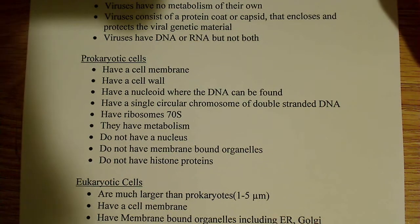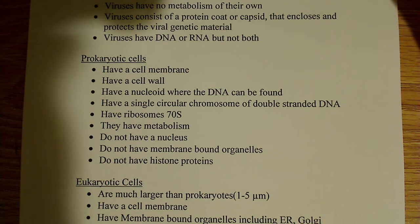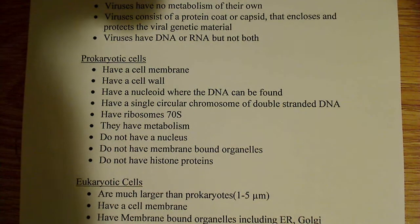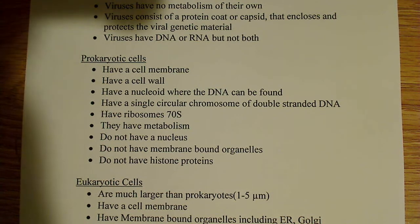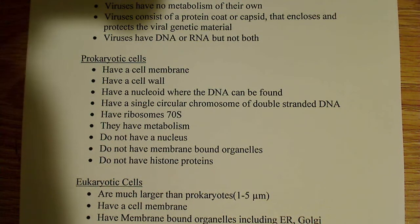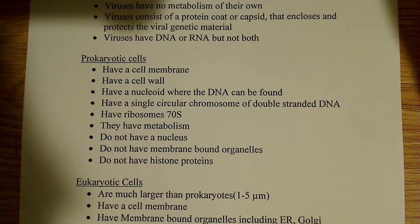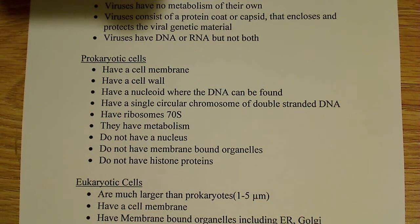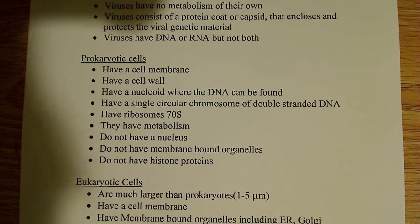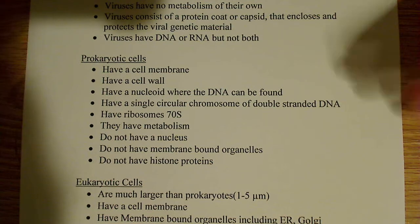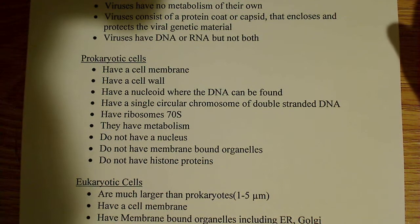Prokaryotes also have a single circular chromosome, which is different from what humans have — humans have linear chromosomes. It is double-stranded DNA, usually. These are generalizations, and of course there are exceptions to the rule, but in general these are the characteristics that prokaryotic cells would have.